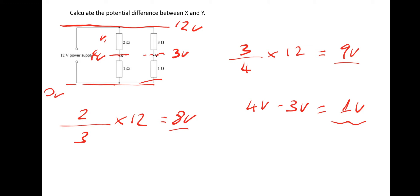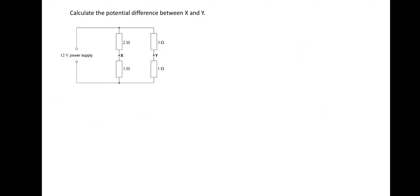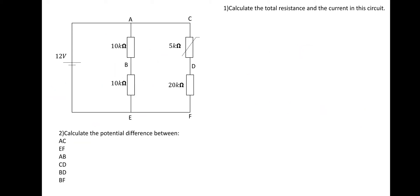Well done if you got that. If not, rewind and have another go — that technique is really important. Moving on: calculate the total resistance and current in the circuit, then find the potential difference between points A to C, E to F, AB, CD, BD, and BF.